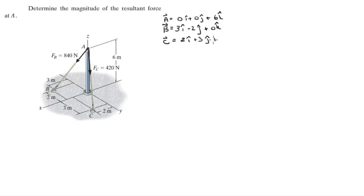So the vector AB is found by subtracting the vector A from the vector B, and it comes out to be three I minus two J minus six K. The magnitude of AB is found by doing the square root of the sum of the squares of the values.